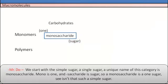We start with a simple sugar, a single sugar. A unique name for this category is monosaccharide. Mono means one and saccharide is sugar. So a monosaccharide is one sugar. See, isn't that such a simple sugar?